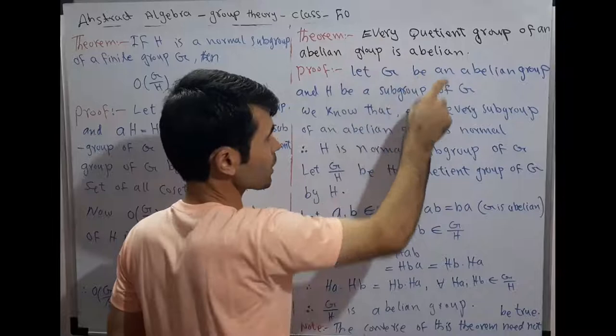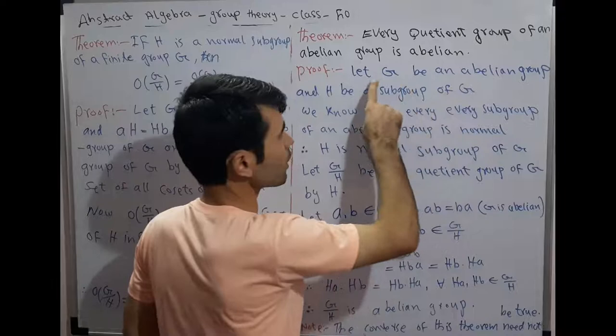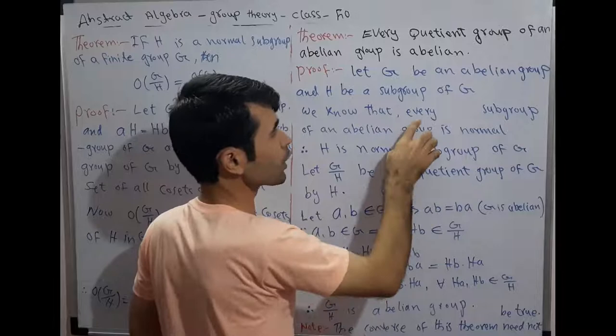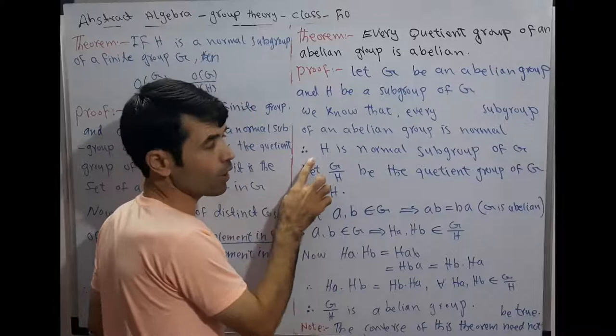Let G be an abelian group and H be a subgroup of G. We know that every subgroup of an abelian group is normal. Therefore H is a normal subgroup of G.